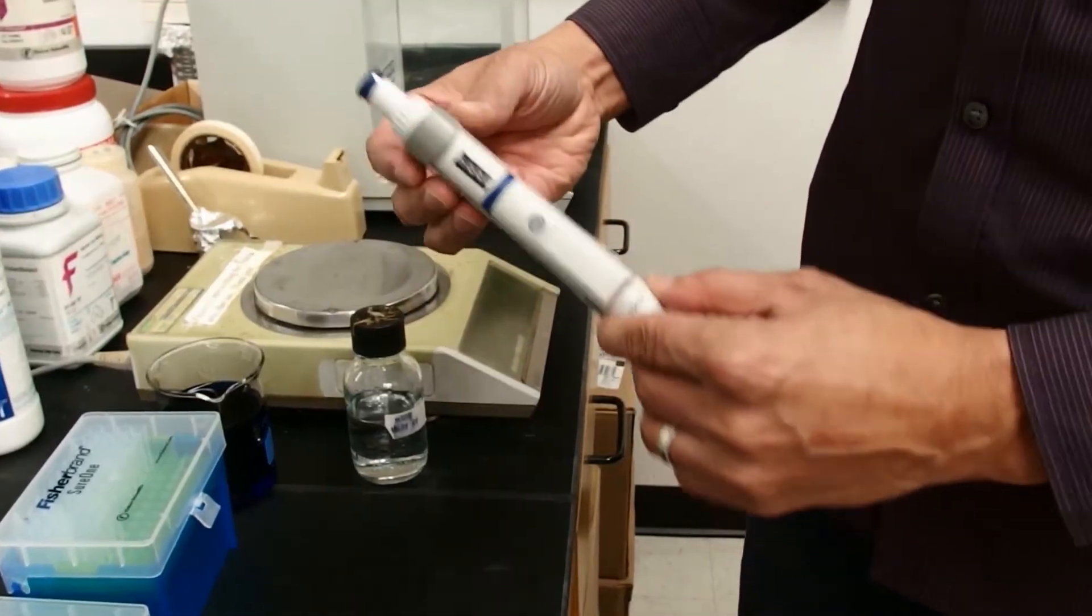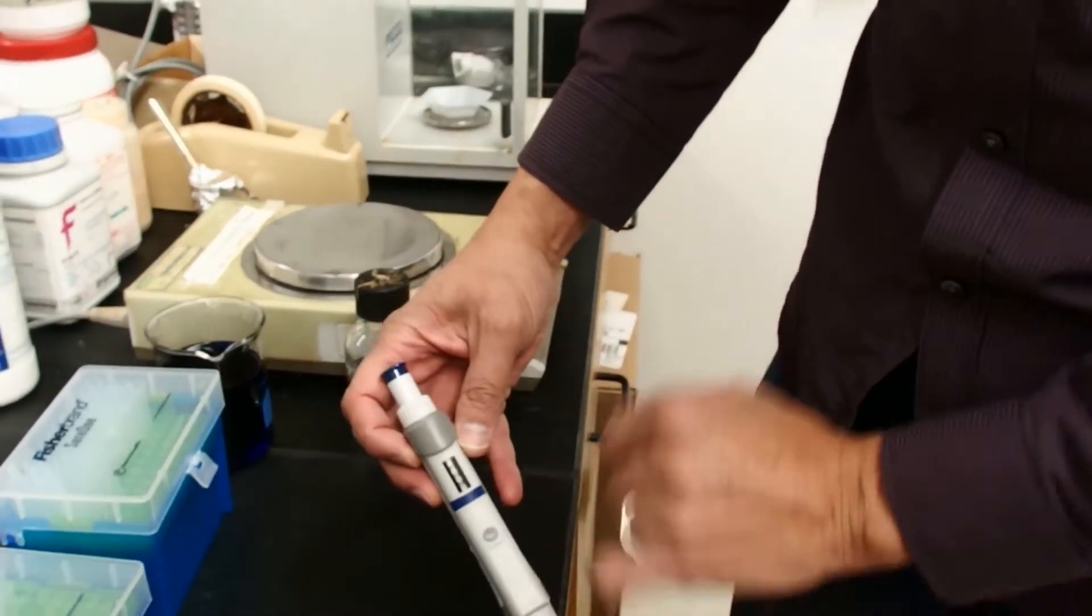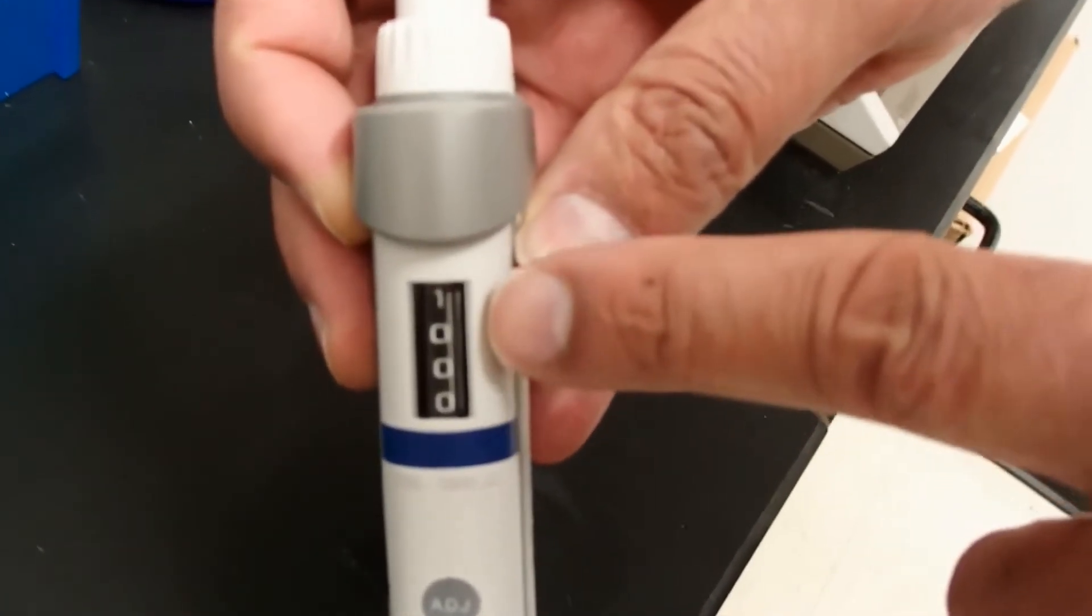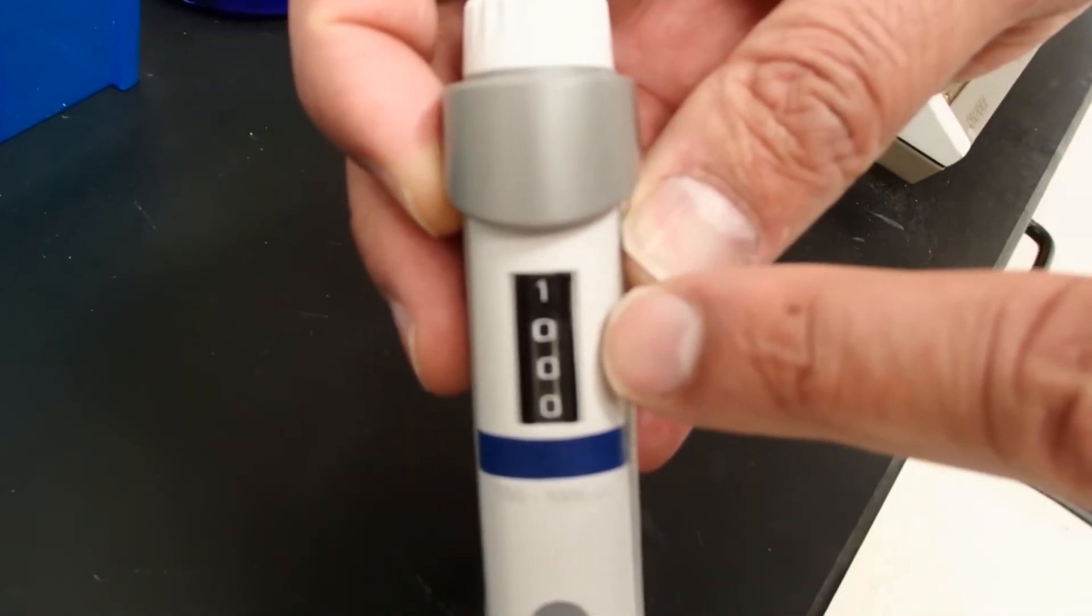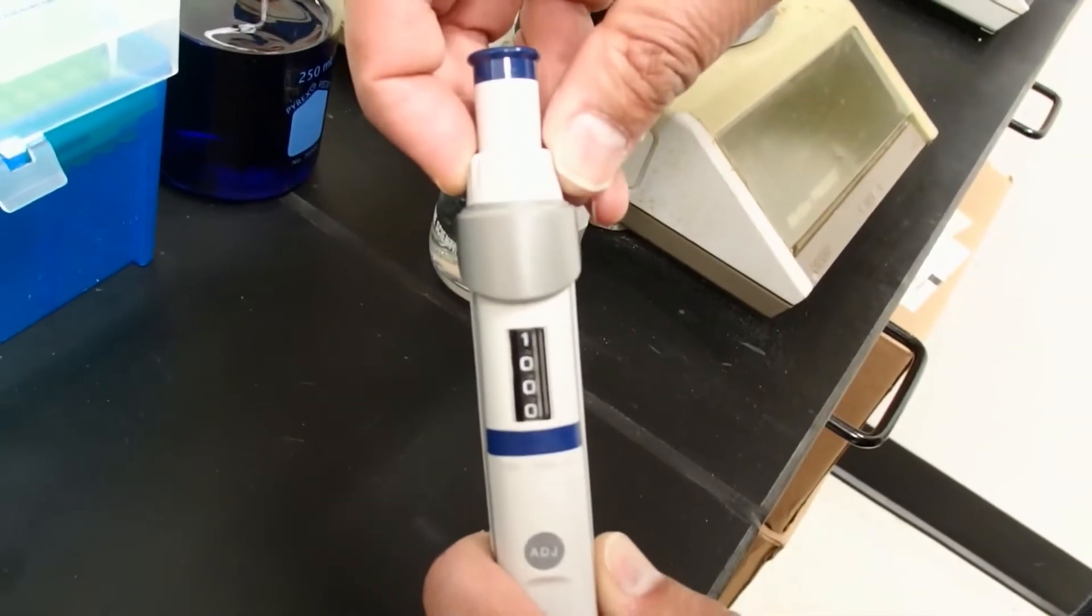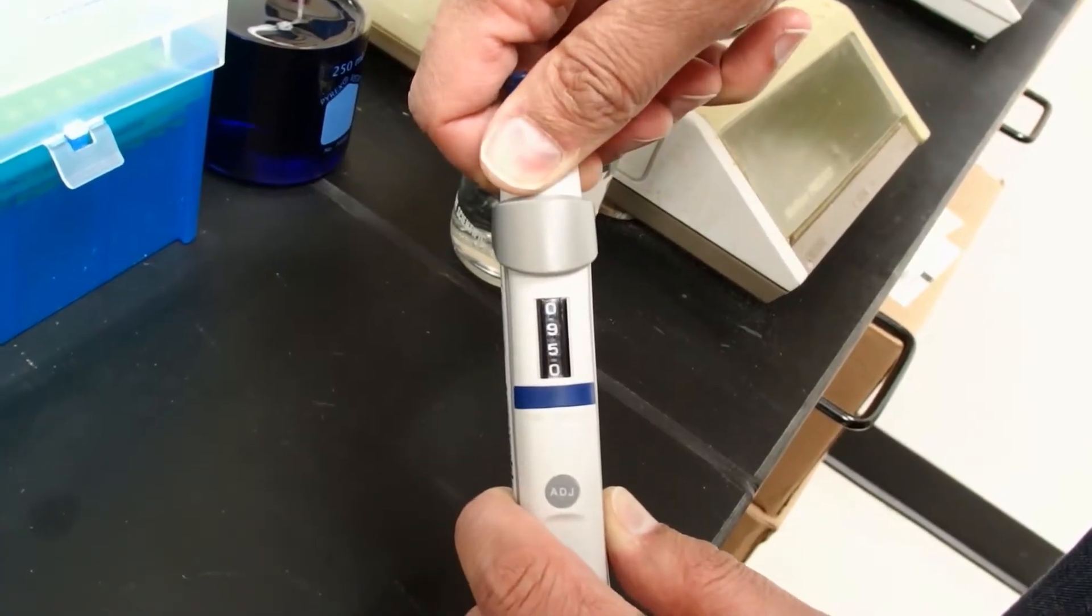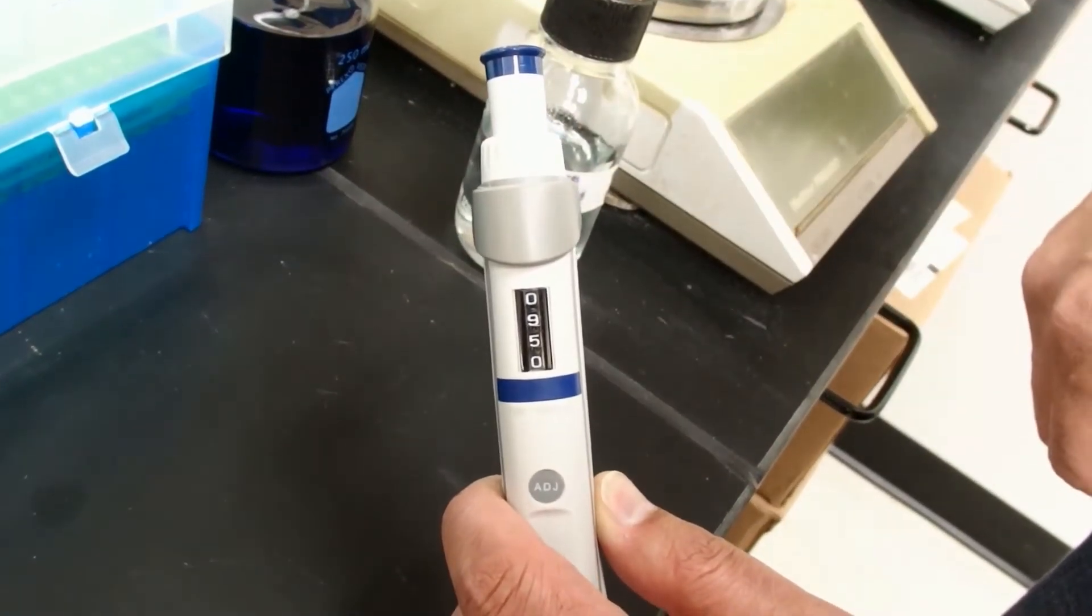It has a number of parts. Here we have a screen where we can determine how much volume we're going to pipette. Right now it's set to 1,000 microliters. To change that, we turn this dial. Now I have changed it to 950 microliters.